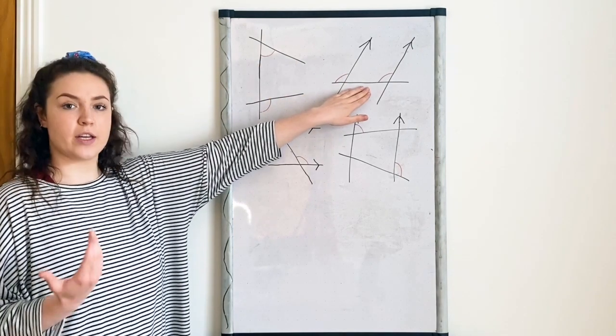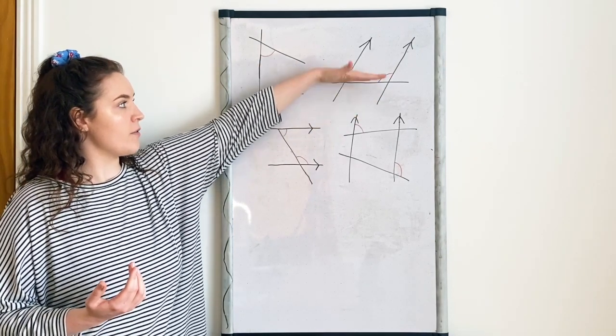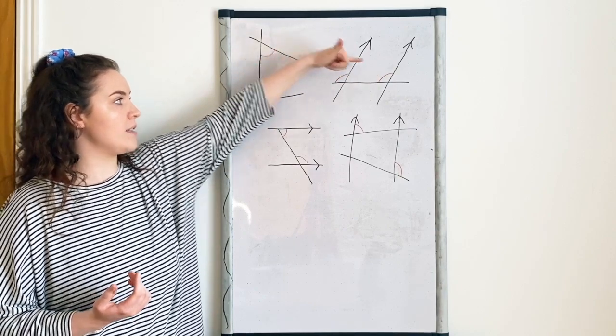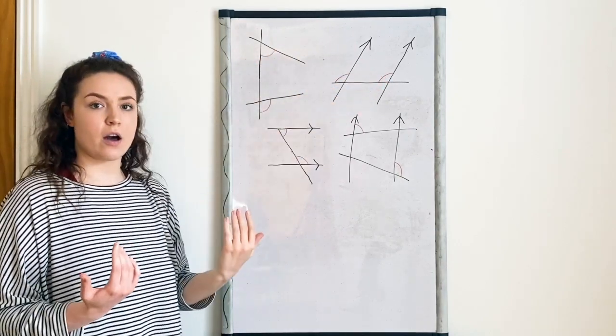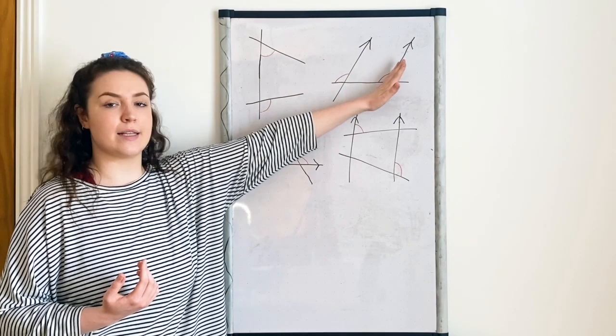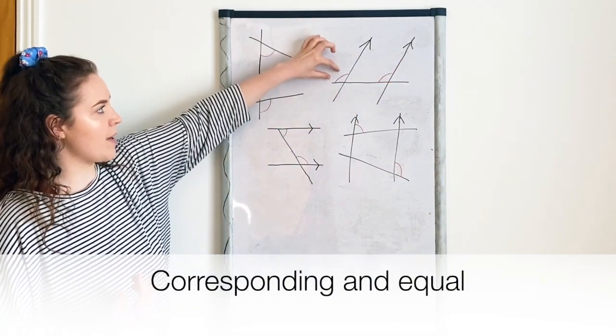Over here, first check if they're corresponding. They're on the same side of the transversal and in corresponding positions, so they are corresponding, and because they're on parallel lines, they are going to be equal.